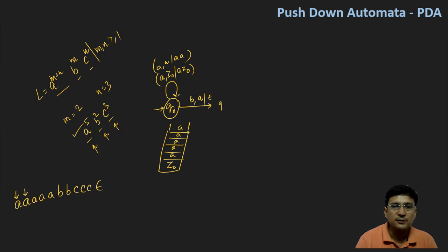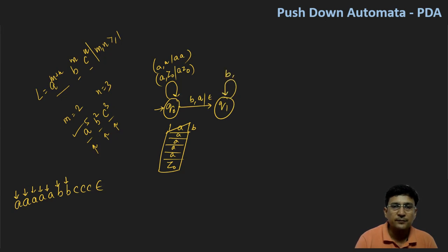We move to q1 state. For the first b, the corresponding A is popped. We have seen all the a symbols on the input tape, and now we are seeing the b's. For each corresponding b, we will pop the stack top A.